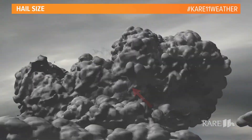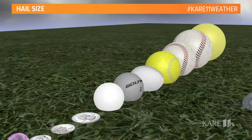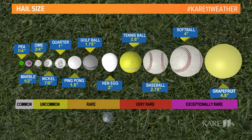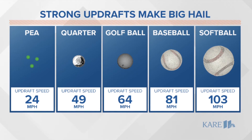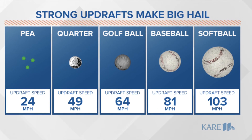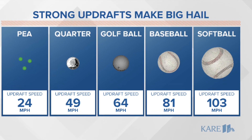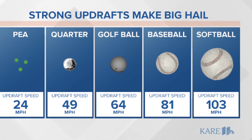And what that tells us is how strong that storm is, or how strong that updraft is. The larger the hail, the larger the updraft needed to sustain it. Up to softball size, hail means 103 mile-per-hour winds sustaining that ice until finally it gets so heavy that it falls to the ground and does a lot of damage.